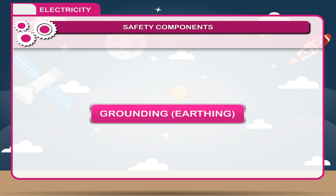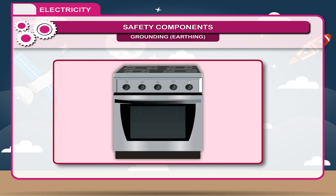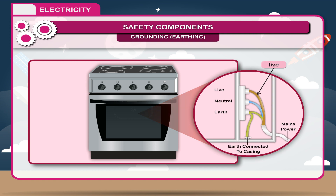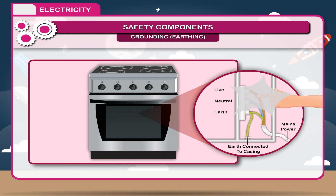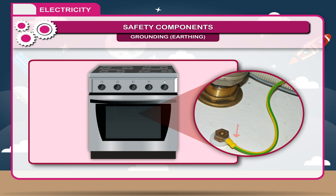Grounding/Earthing: To operate an electric apparatus, we require two wires — one live and the other neutral. Due to wear and tear or excessive heating, sometimes the live wire touches the body of the apparatus, causing an electric shock. To avoid this risk, the metal body of the electric appliance is earthed — a wire is connected to the cover of the appliance on one side and to the earth point in a three-pin plug on the other. One end of the earth point is buried deep in the earth. Earth wire is usually given a green or green-yellow colour.